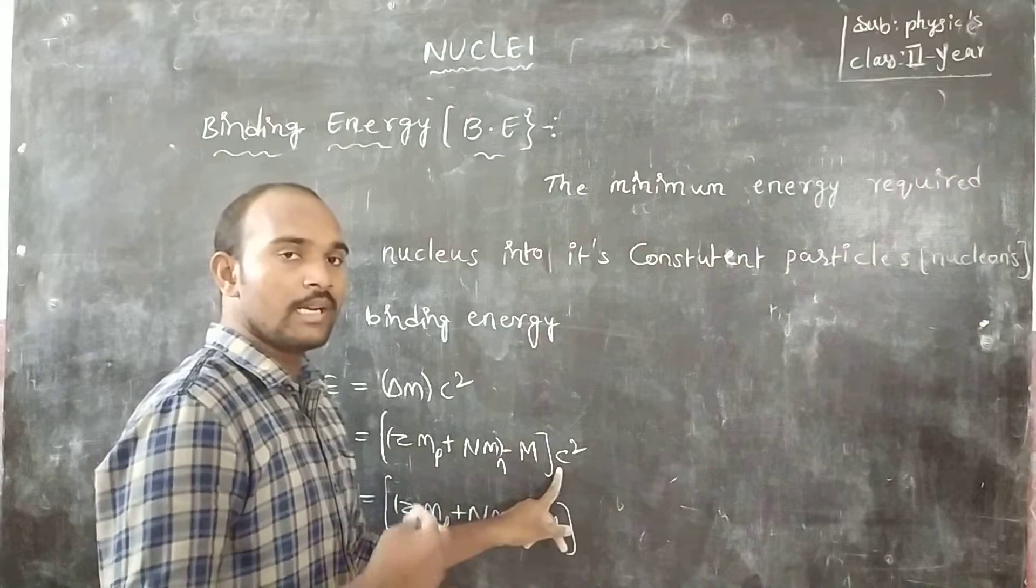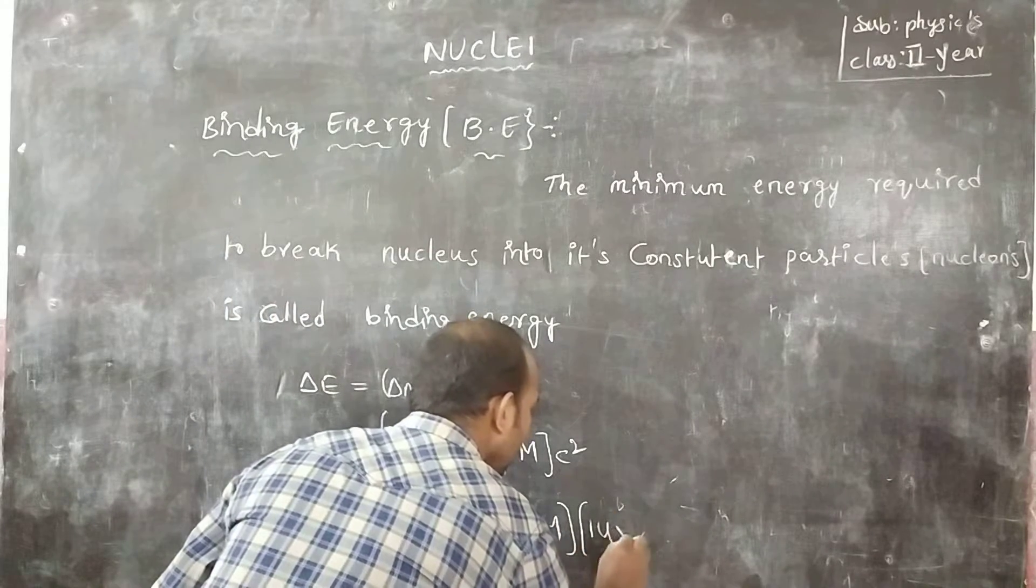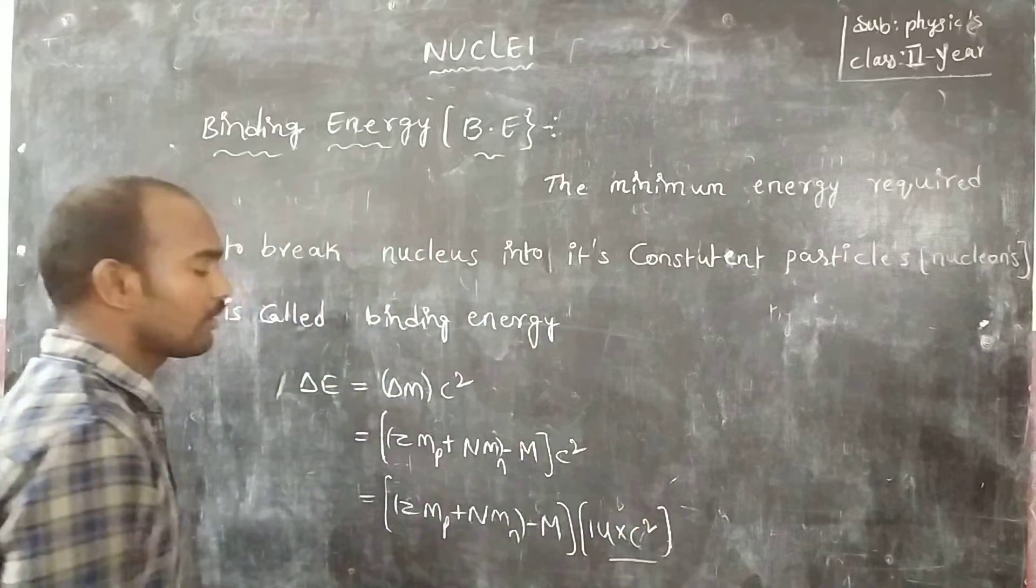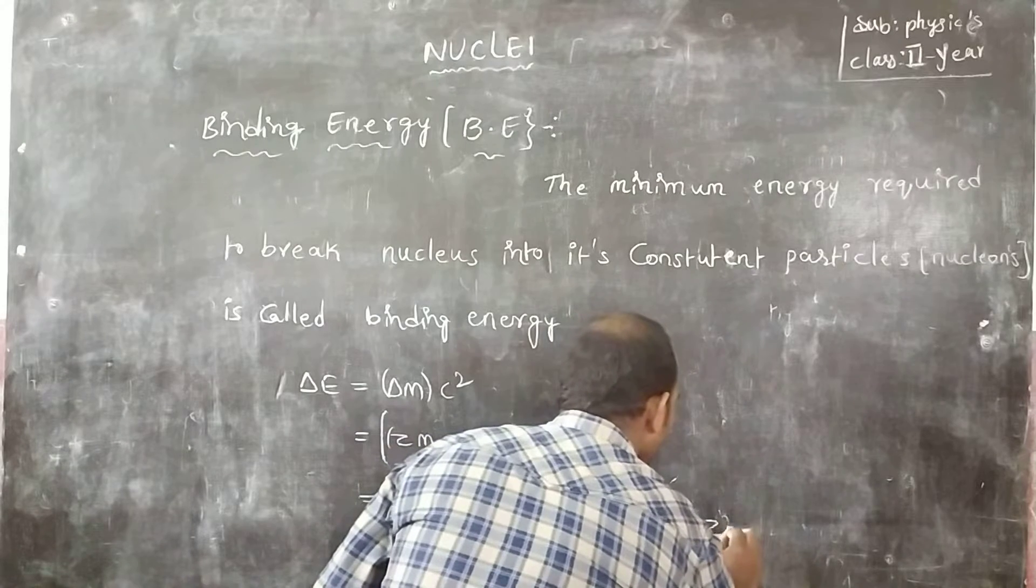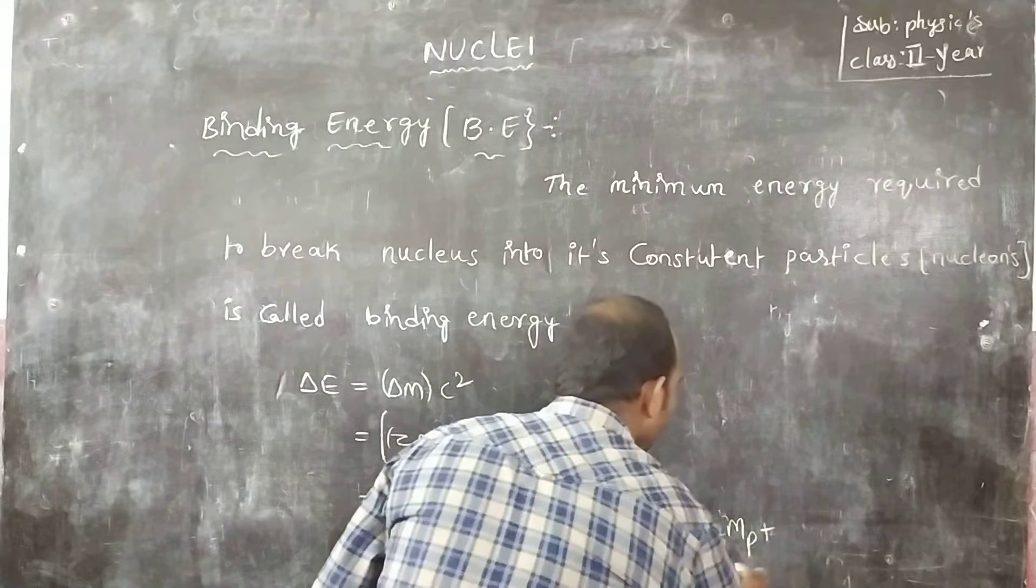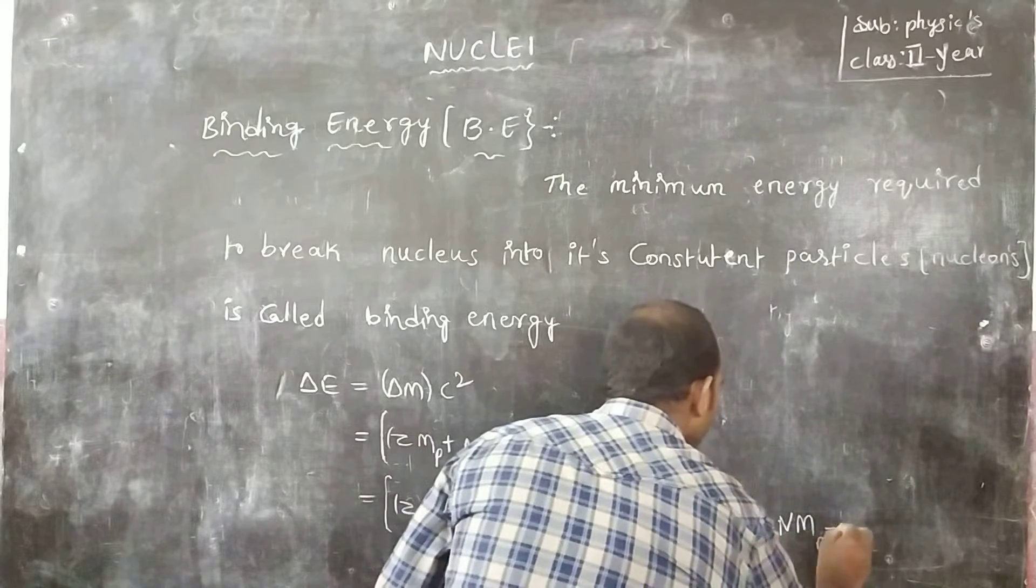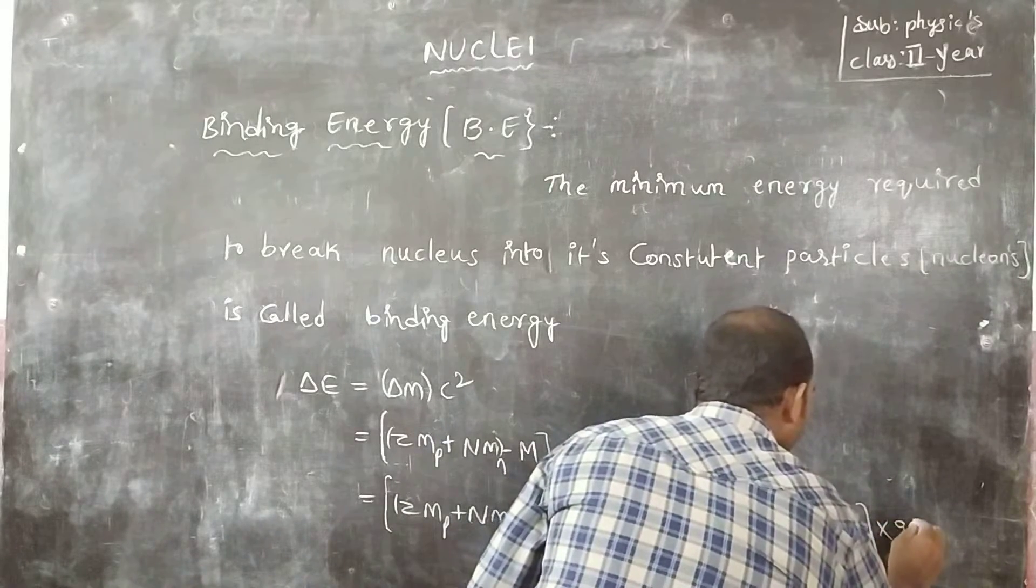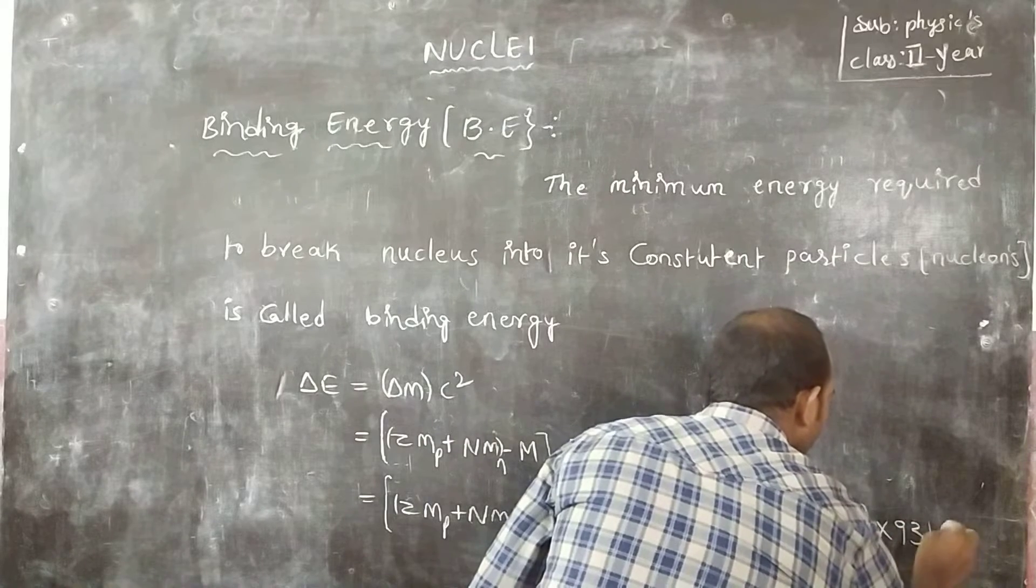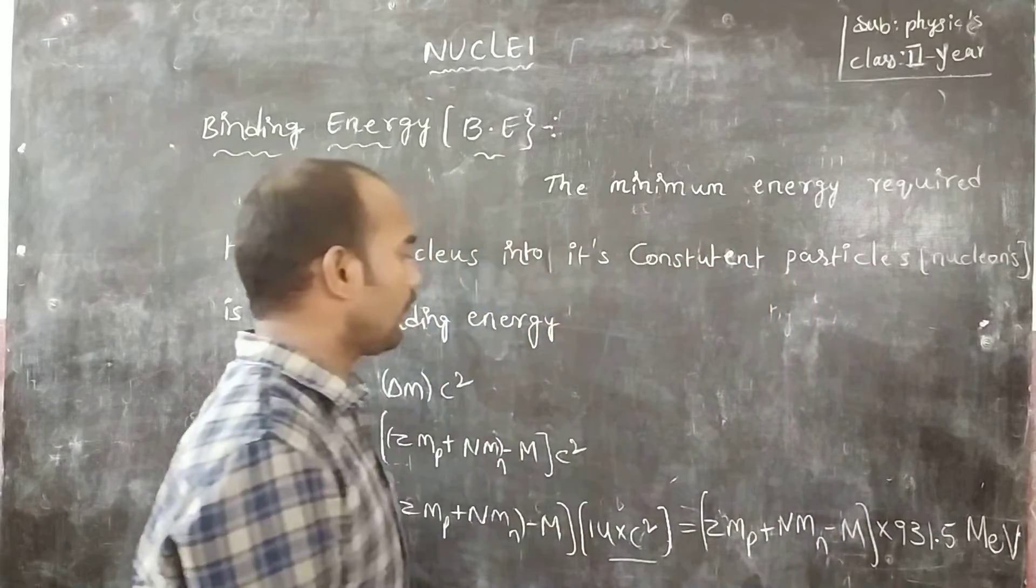Into 1 unit of C square, that is equal to 1 unit into C square, that will use to 931. That means Z mass of protons plus N mass of neutrons minus mass of the nucleus into 931.5 mega electron volt. Is it clear?